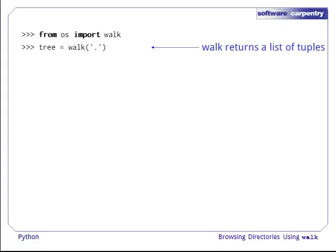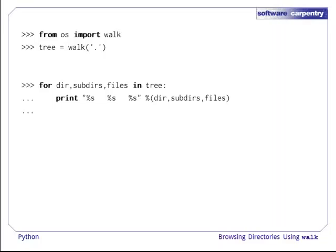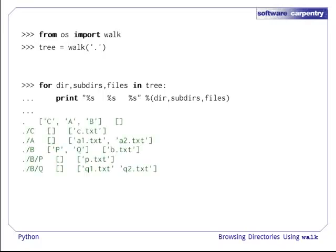We now know that walk returns a list of tuples, so let's save them in a variable. We know that each tuple consists of a directory path, a list of sub-directories in that directory, and a list of files. So, we can use a for-in-loop to print each tuple in the list in turn. And here is the result.